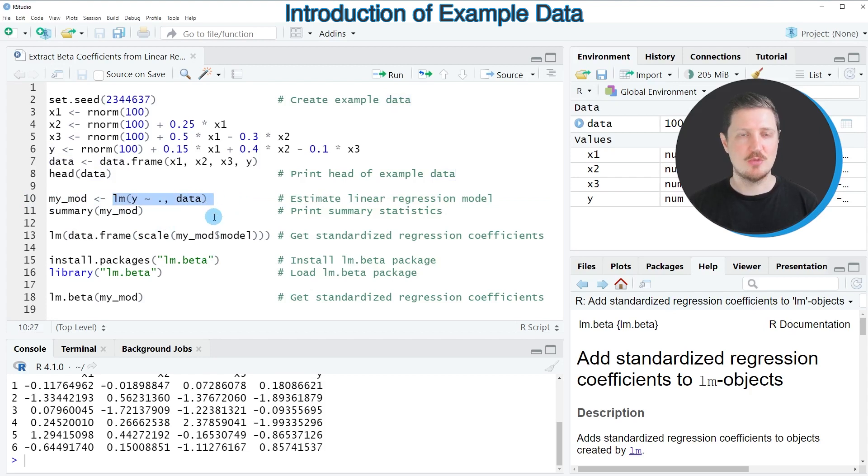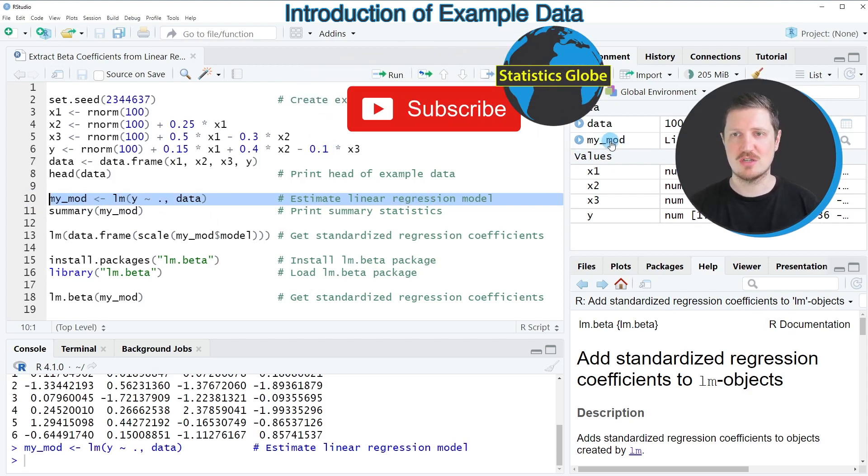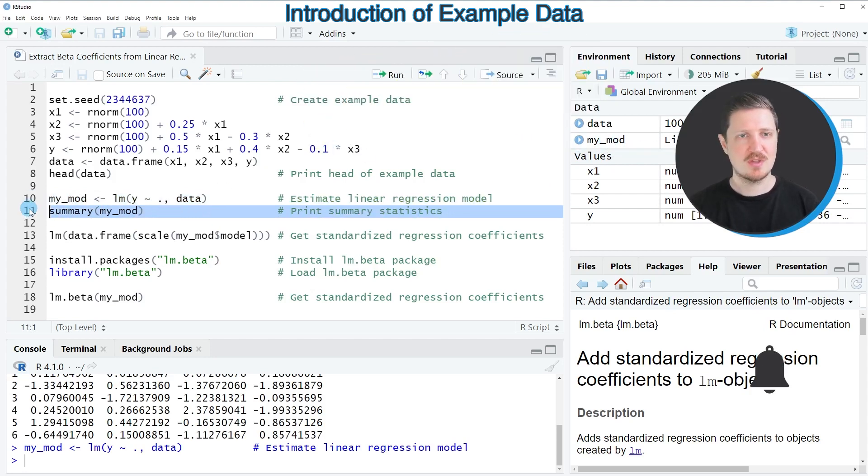And then I'm storing the output of the lm function in a new data object that I call my_mod. So after running line 10 of the code this new data object is appearing at the top right and now we could calculate certain summary statistics based on this model object using the summary function.